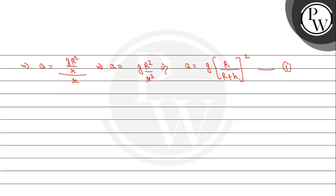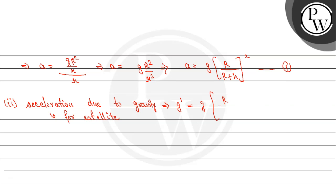This is equation 1. For equation 2, we need to find acceleration due to gravity at any point along the satellite's path. Let's call it g'. The formula is g' = g·R² / (R + H)². If we compare equations 1 and 2, the acceleration of the satellite equals the acceleration due to gravity acting on the satellite.